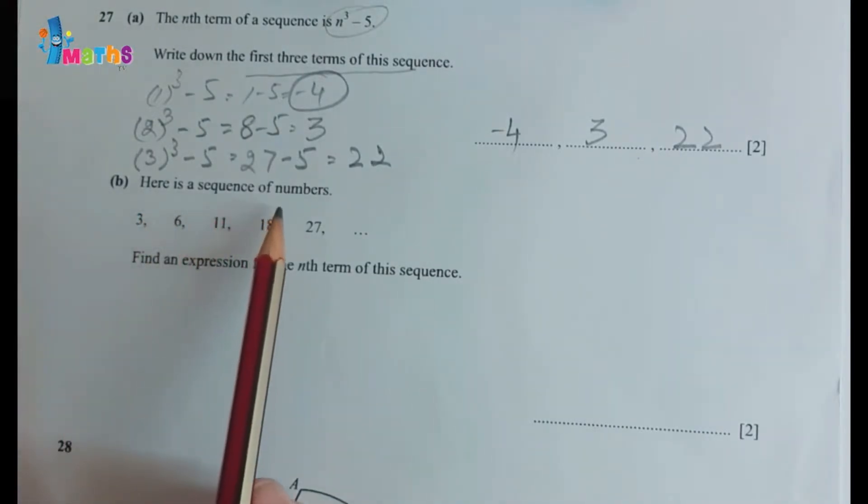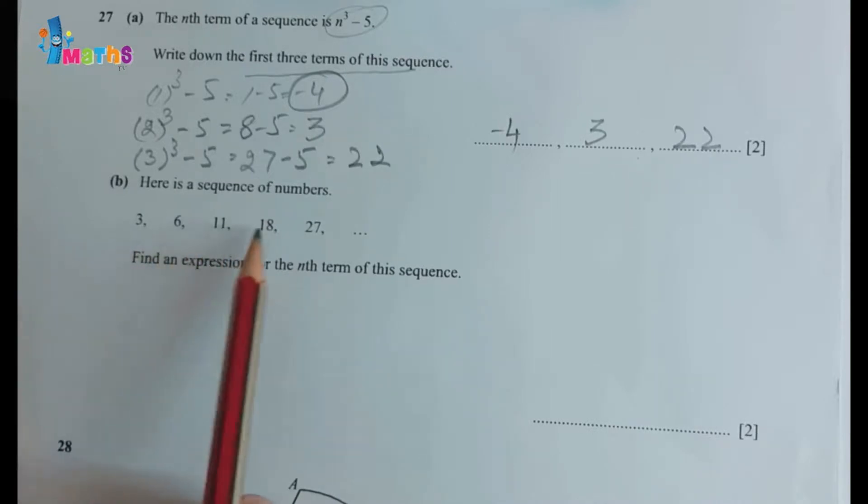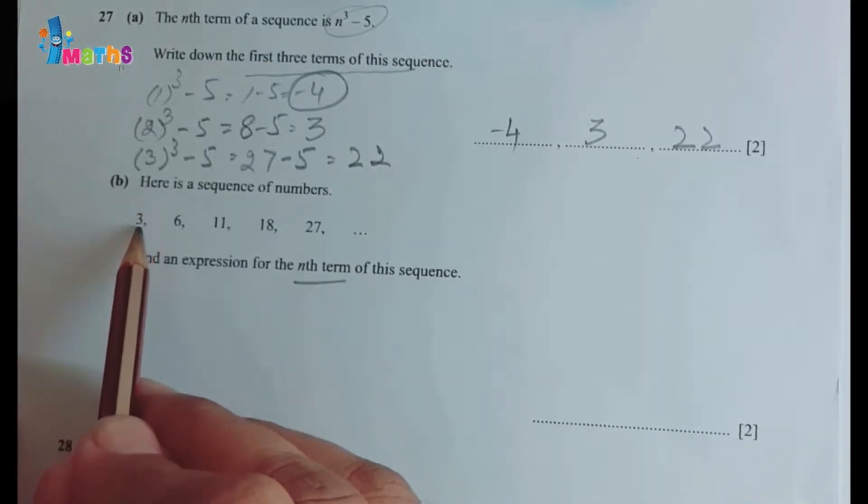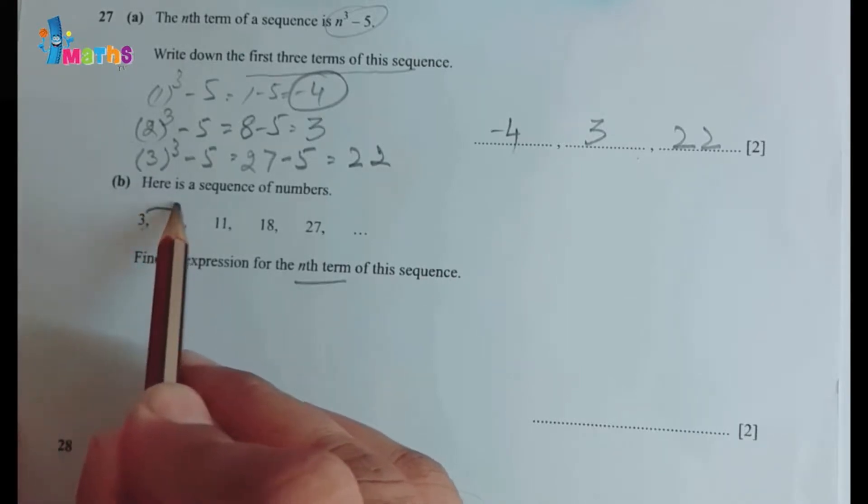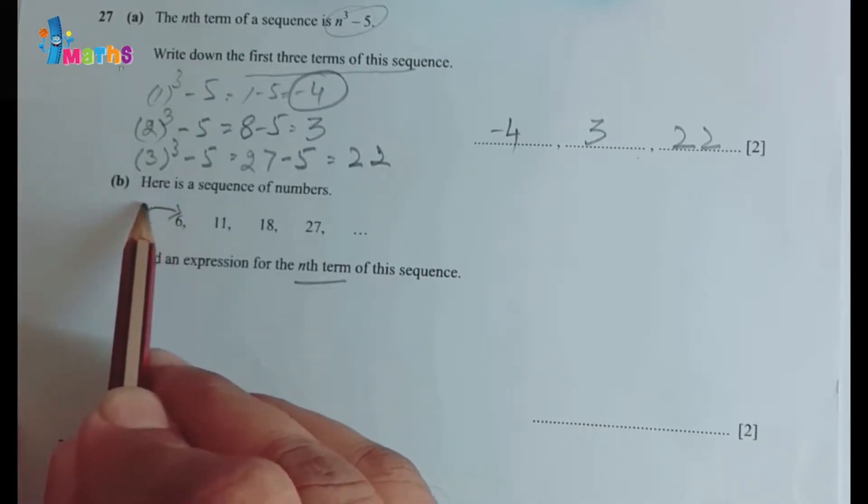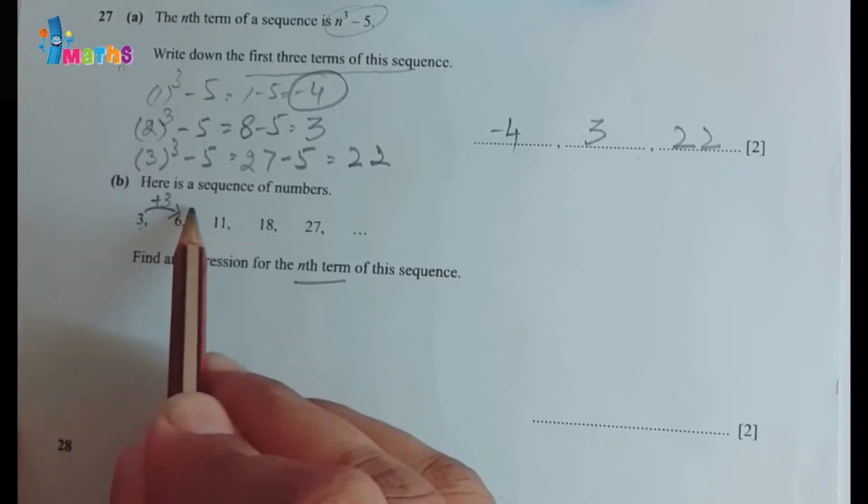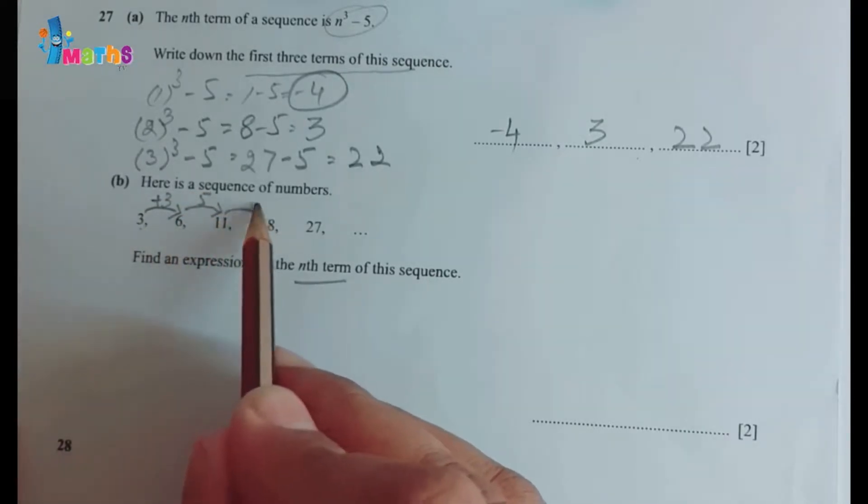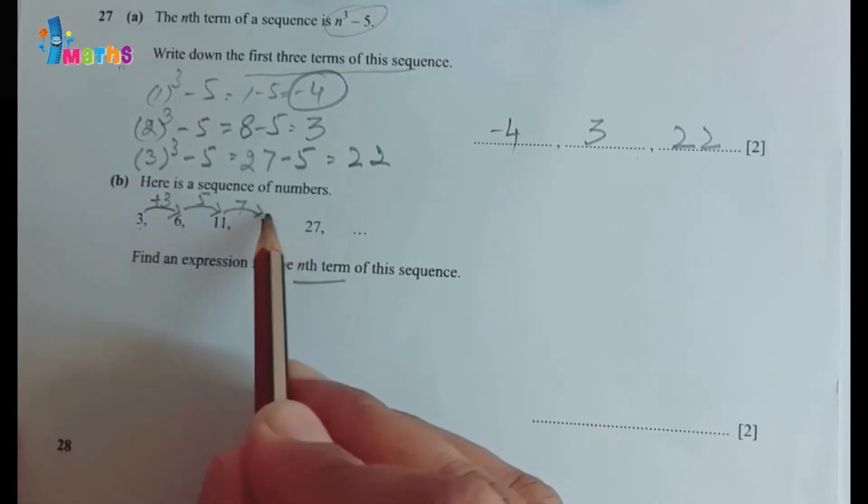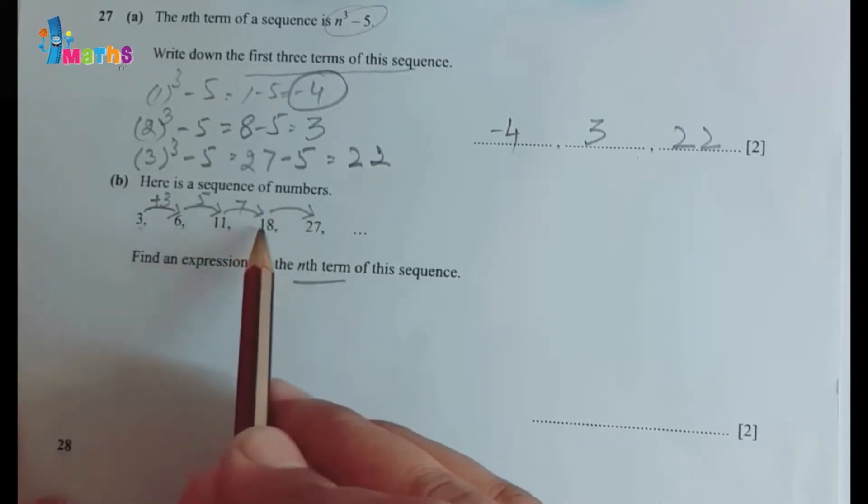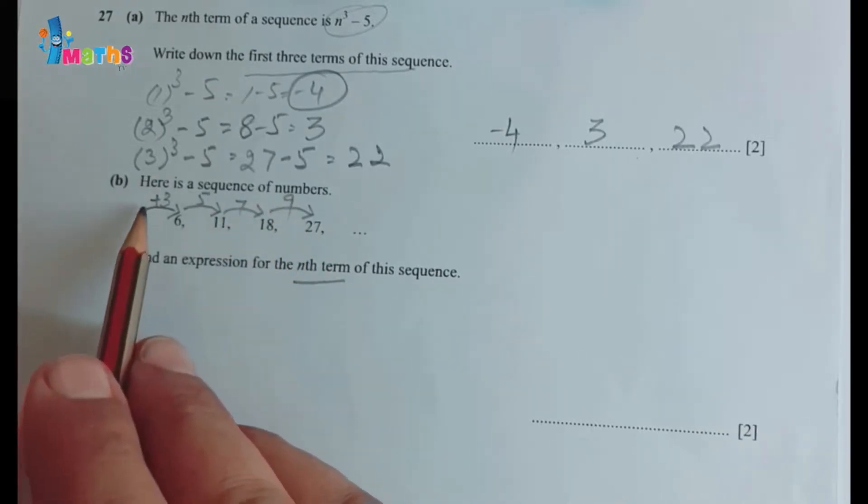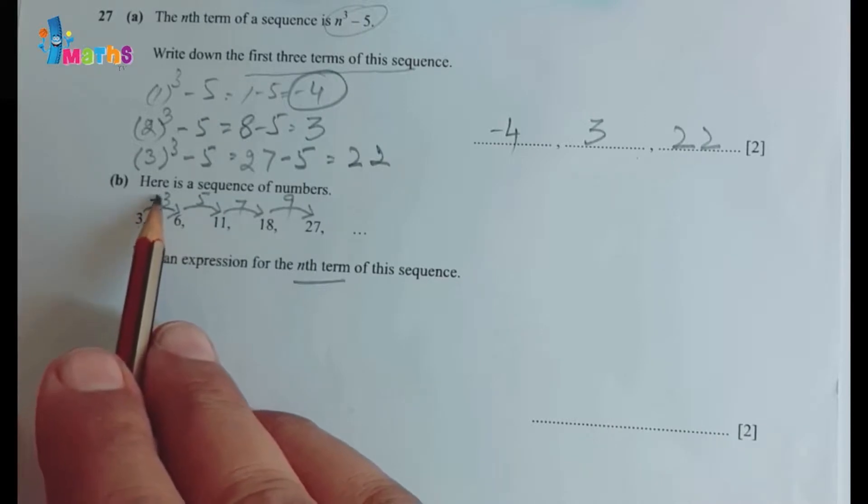Part b: here is a sequence of numbers 3, 6, 11, 18, and 27. Find an expression for the nth term of the sequence. We'll check the difference: 3 plus 3 is 6, 6 plus 5 is 11, 11 plus 7 is 18, and 18 plus 9 is 27. So if we check the second-order difference...